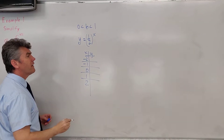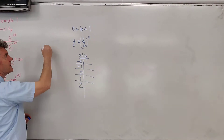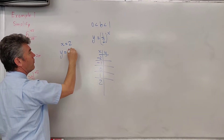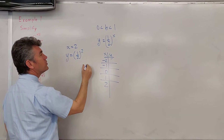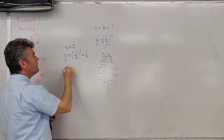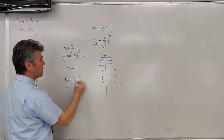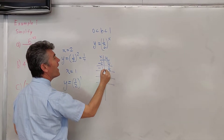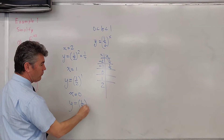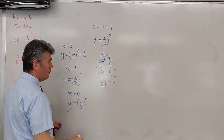I'll start with positive exponents first. If x is equal to 2, we have y equal to one-half squared, which is 1 over 4. If x is equal to 1, we have y equal to one-half raised to the first, which is just one-half. If x is equal to 0, we have y equal to one-half raised to the power of 0. Any number except for 0 raised to 0 is 1, so y equals 1.